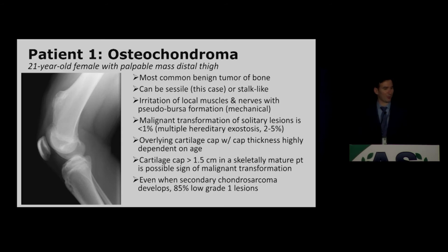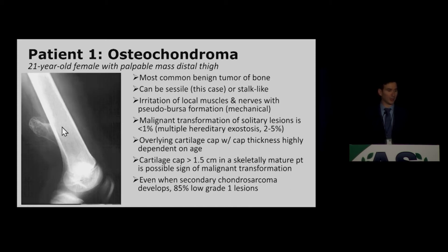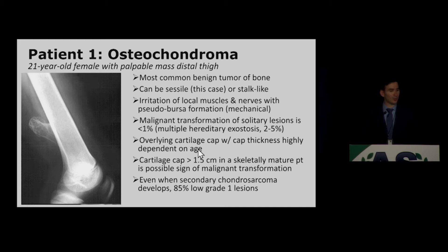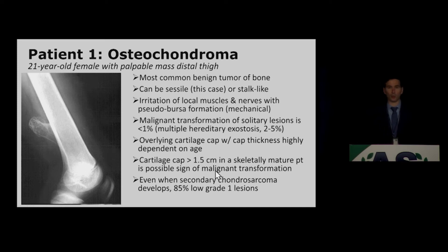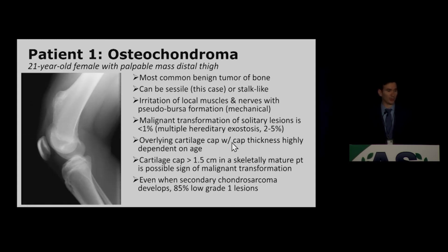Patient 1 is an osteochondroma. They can be sessile, as in this case, or stalk-like. The important feature is contiguity with the marrow cavity. This is the most common benign tumor of bone and by far the most common tumor that presents to orthopedists as symptomatic — often mechanical compression or impingement of nerves or muscles. Malignant transformation is very rare, less than 1% in solitary lesions. A cartilage cap greater than 1.5 cm in a skeletally mature patient can indicate malignant transformation. We rarely do further workup in the ED; just tell the provider it's likely mechanical.